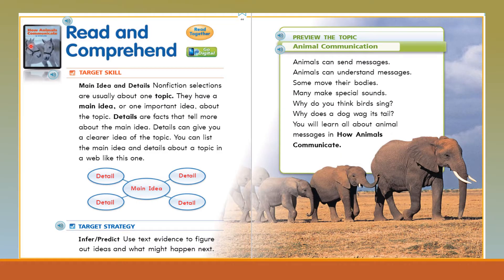Before we begin reading, let's look a little closer at our target skill of main idea and details. Nonfiction selections are usually about one topic. They have a main idea — one important idea about the topic. Details are facts that tell more about the main idea and can give you a clearer idea of the topic. You can list the main idea and details in a web — the main idea in the middle and details on the sides. Usually we try to give four details, but sometimes two or three depending on the paragraph.